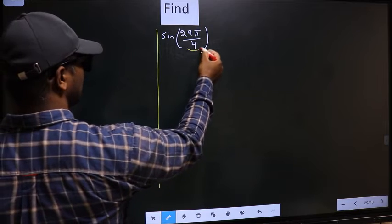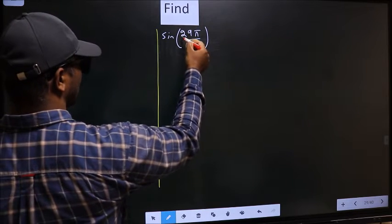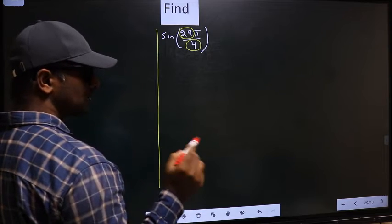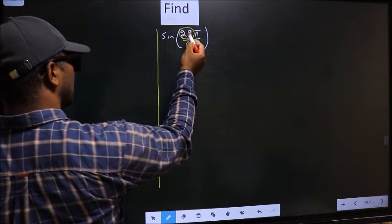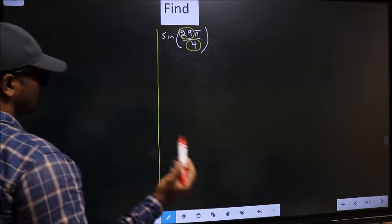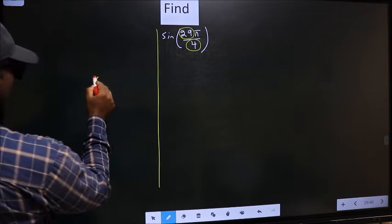In the denominator we have 4, in the numerator we have 29. So now you should look: 29 is close to which multiple of 4?